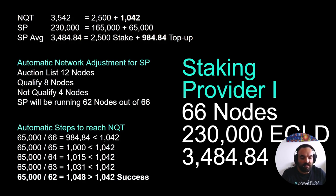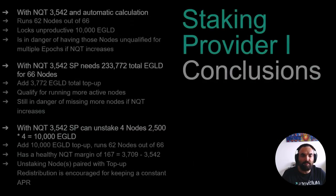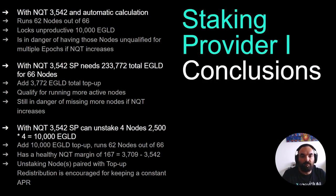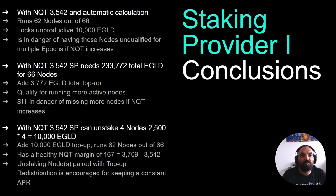This is how the system decides how many nodes a staking provider will run. Let's get to the conclusions for this example. Our staking provider 1, with automatic calculation, gets 4 nodes that are not qualified.